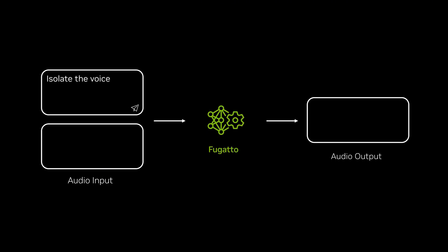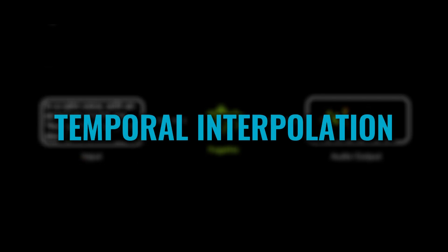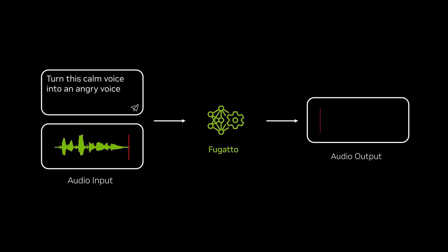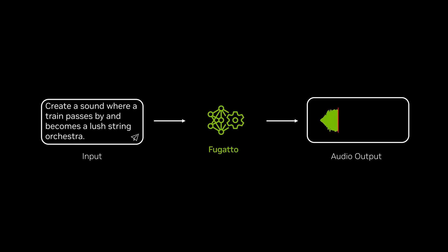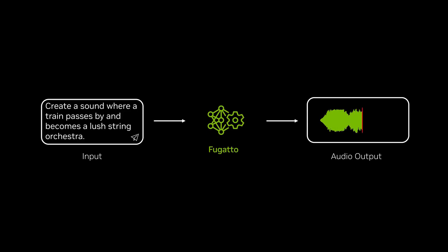Composable ART also allows Fugato to generate sounds that change over time — a feature the team calls temporal interpolation. This means Fugato can generate a sound that slowly transitions into another sound or completely fades away. Take a look at this clip where Fugato generates an audio of a train passing by, and it then transforms into an orchestra sound. This sounds pretty great for a filmmaker — imagine the transitioning scenes they can easily generate thanks to this new capability.